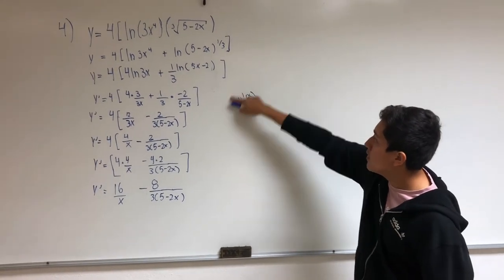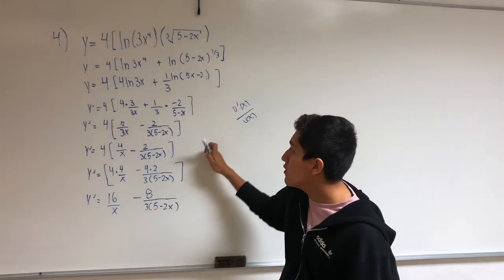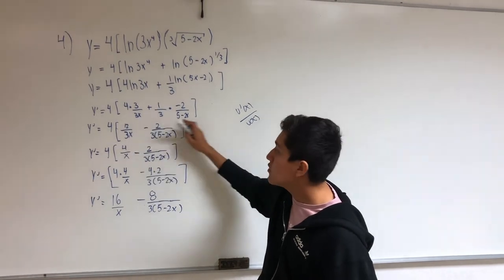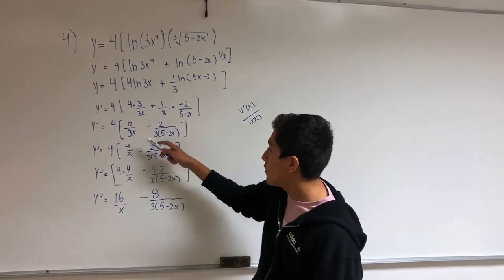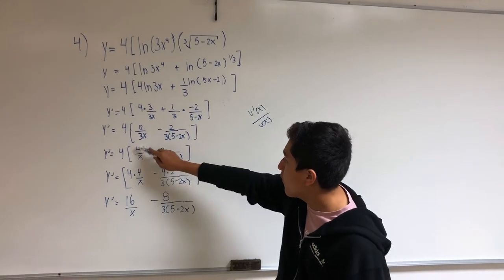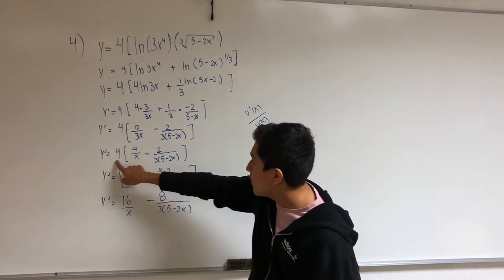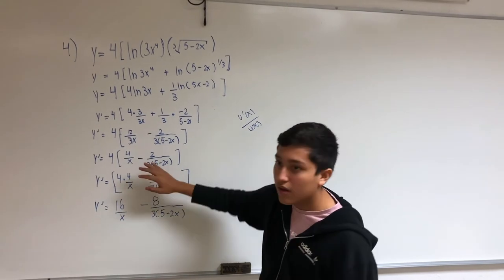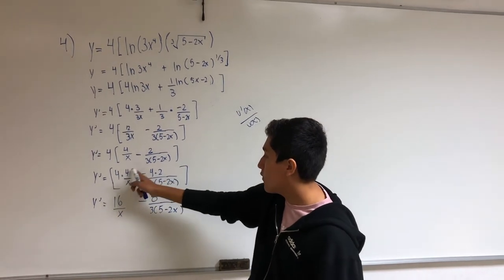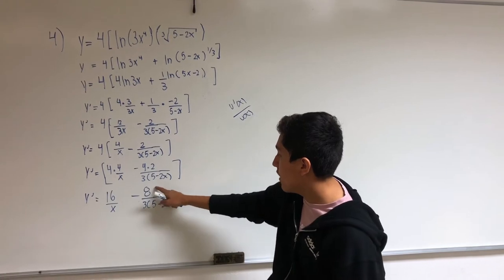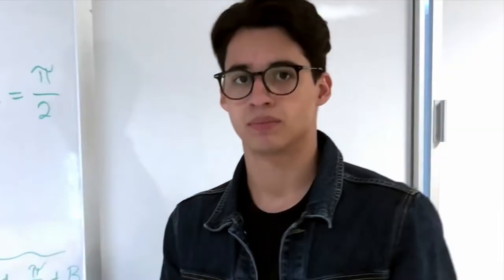The next step is to simplify these terms. I multiply 4 times this term and we get it simplified. Then I simplify further to get an easier expression: 4 over x, and this stays the same. Finally, I multiply the outside 4 with the inside expression: 4 times 4 is 16 over x, and minus 4 times 2 is 8 over (5 minus 2x). That is the final answer.